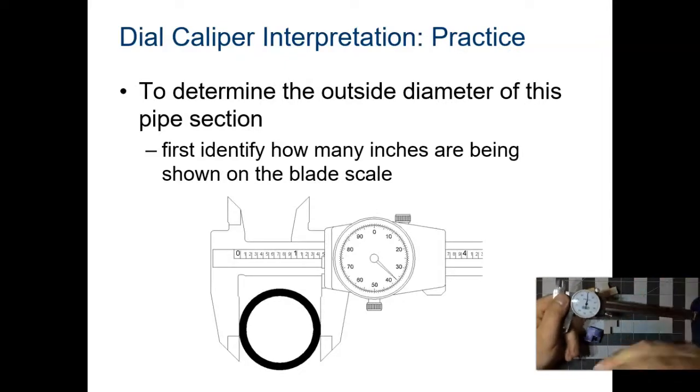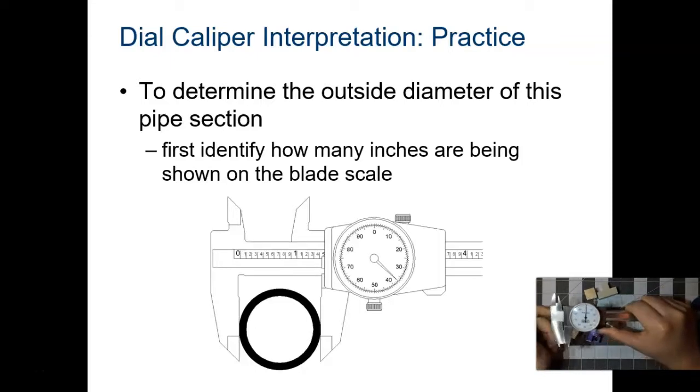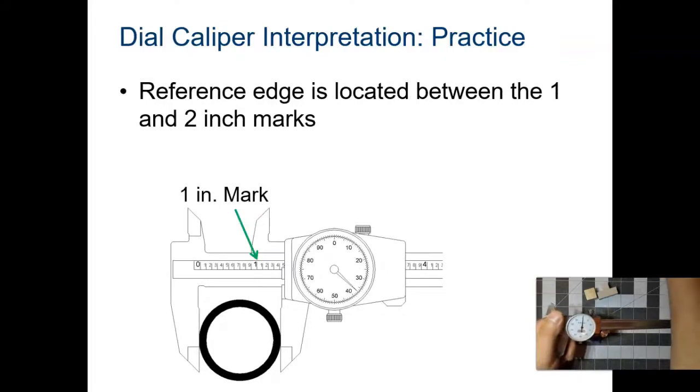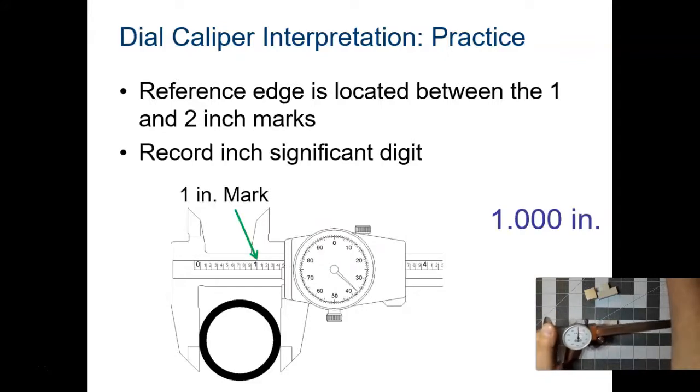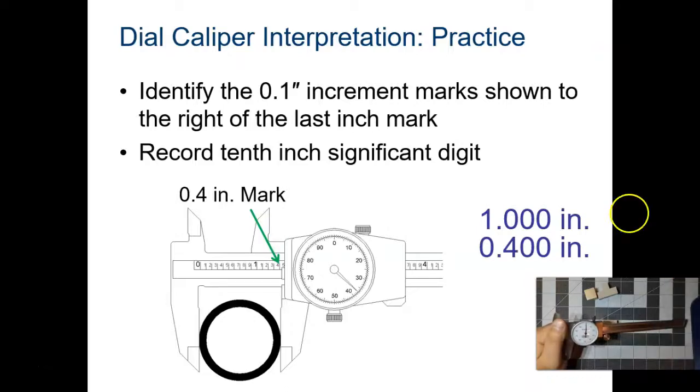The best way to learn how to do this is by practicing and looking at this example. To determine the outside diameter of this pipe section, first identify how many inches are being showed on the blade scale. We went past the large one inch mark. The reference edge is located between the one and two inch marks. So you would record the significant digit, so you would write one. And then you would look at where that edge is. It's past the 0.4, so you would write 0.4.